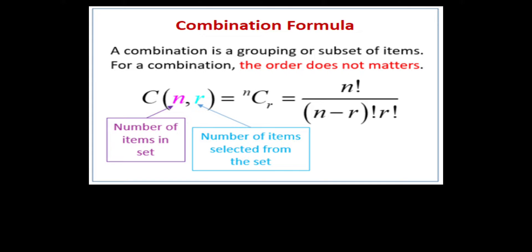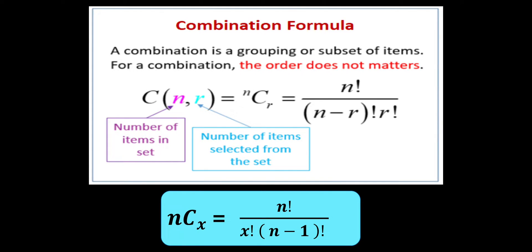From the combination formula: a combination is a grouping or subset of items, where n is the number of items in the set and r is the number of items selected from the set. The combination of n to r equals n factorial over (n minus r) factorial times r factorial. We will use x instead of r, so: combination of n to x equals n factorial over x factorial times (n minus x) factorial.